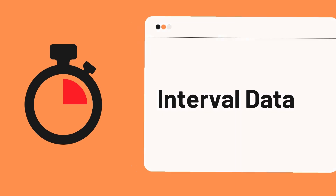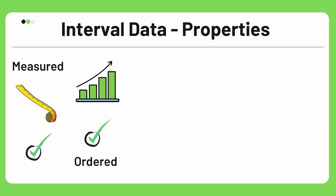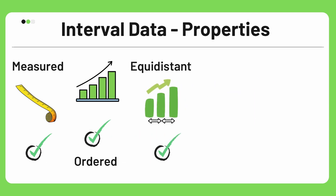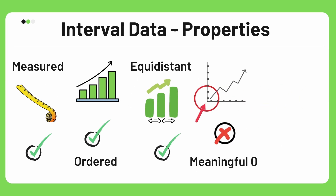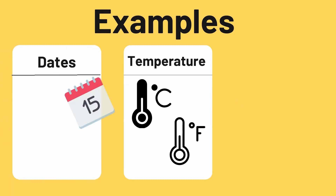To understand interval data, let's see its distinct properties. First, it is measured in the form of numbers — for example, you can easily measure temperature with a thermometer. Second, it has rank and order — while measuring temperature, 1 degree Celsius is always lower than 5 degrees Celsius. Third, it is equidistant, meaning it has equally spaced intervals — the difference between 1 and 2 degrees Celsius is the same as the difference between 4 and 5 degrees Celsius. Fourth, the distinguishing feature of interval data is that it doesn't have any meaningful zero. Fifth, interval data can be negative — for example, minus 12 degrees Celsius is very much possible. Some examples of interval data are temperature in Celsius or Fahrenheit, dates, and IQ scale. None of these examples have a meaningful zero.